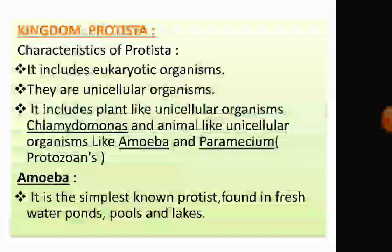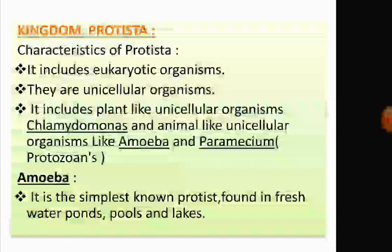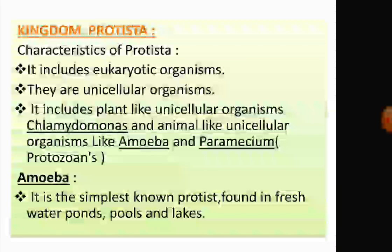Eukaryotic organisms are those whose cells have a nucleus enclosed within a membrane. They are unicellular and include plant-like unicellular organisms like Chlamydomonas, and animal-like organisms like Amoeba and Paramecium. Amoeba and Paramecium are also known as protozoans.